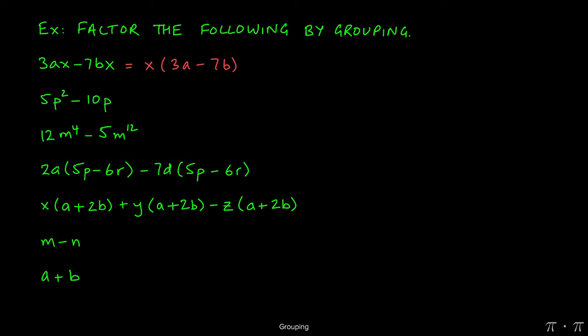We can check this very quickly by simply distributing the X back into this binomial. X times 3A will give us 3AX, and negative 7B times X will give us negative 7BX.